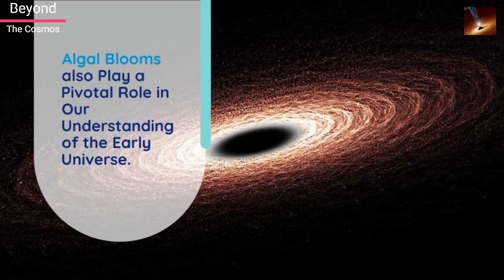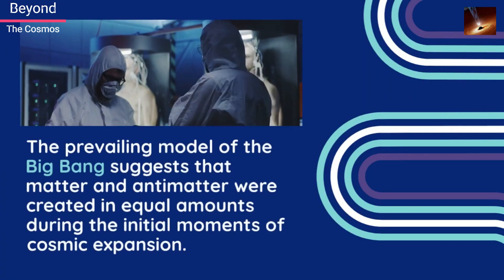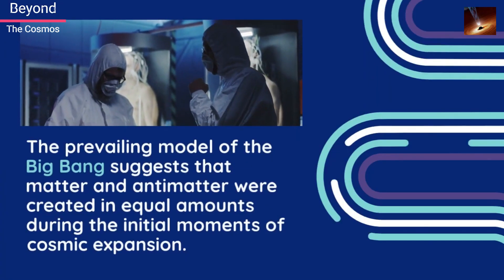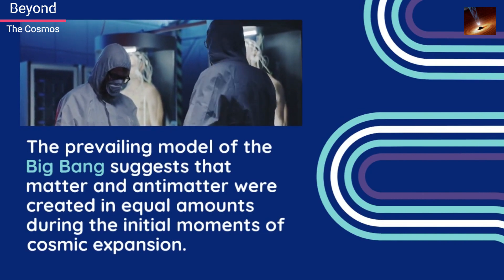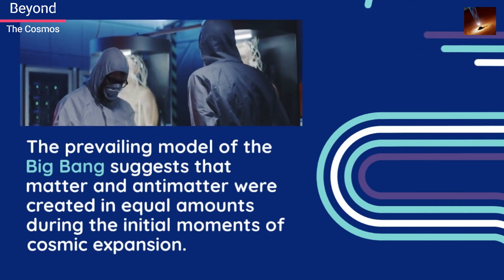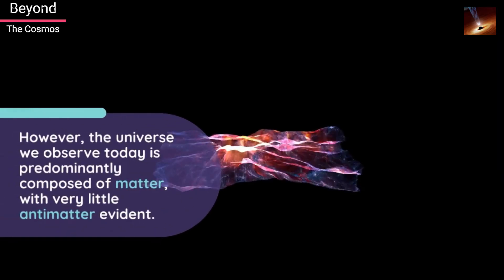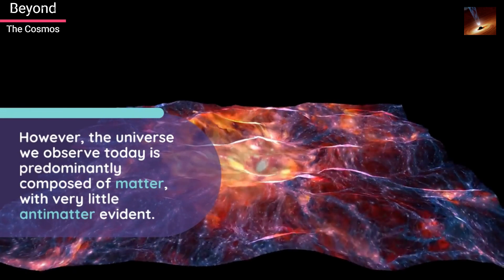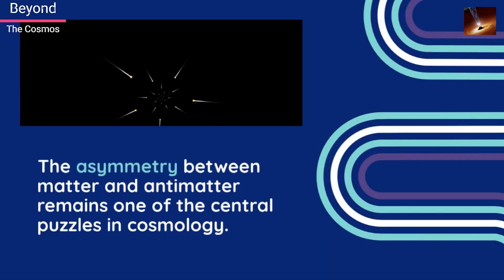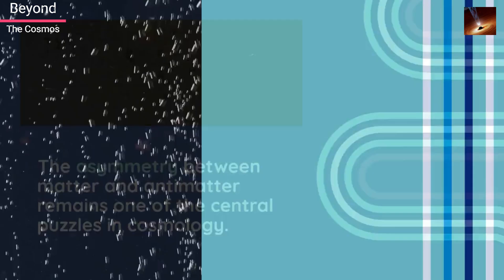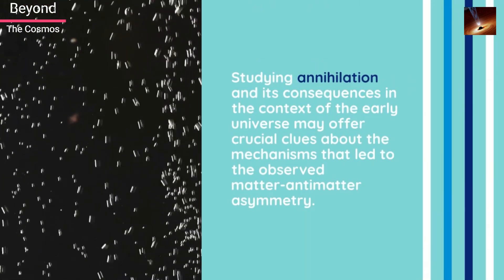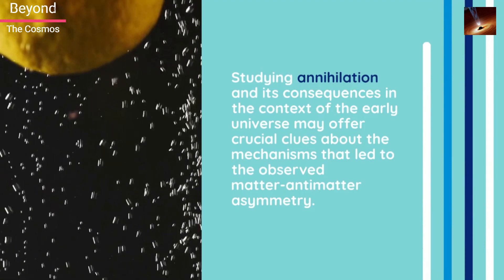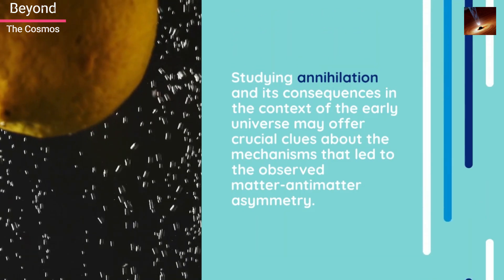Annihilation also plays a pivotal role in our understanding of the early universe. The prevailing model of the Big Bang suggests that matter and antimatter were created in equal amounts during the initial moments of cosmic expansion. However, the universe we observe today is predominantly composed of matter, with very little antimatter evident. The asymmetry between matter and antimatter remains one of the central puzzles in cosmology. Studying annihilation and its consequences in the context of the early universe may offer crucial clues about the mechanisms that led to the observed matter-antimatter asymmetry.